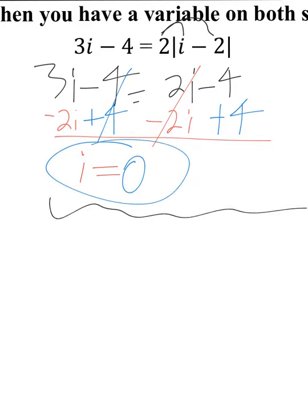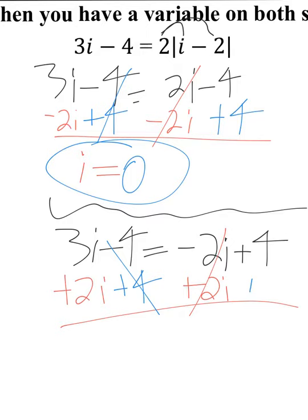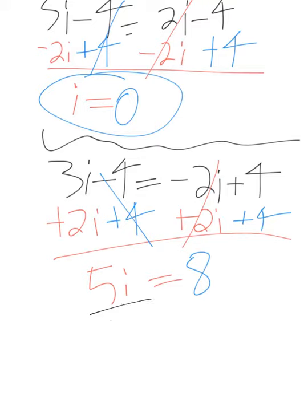Now I flip the signs on one side. I have 3i minus 4, and instead of positive 2i minus 4, I'll say negative 2i plus 4. I add 2i to the other side, which cancels one thing on the right, so I cancel one thing on the left by adding 4 over. I get 5i on the left equals 4 plus 4, which is 8. So 5i equals 8, meaning i equals 8 over 5.